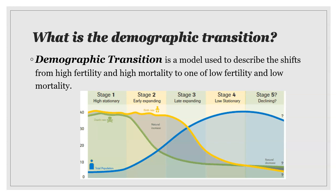Stage two of the demographic transition is characterized by a rapid decrease in a country's death rate while the birth rate remains high. The total population will rise because births outnumber deaths, not because the birth rate is rising. The decrease in death rate is commonly attributed to improvements in overall health, specifically access to pediatric care, as well as education, gender equality, and technological advances in food production and sanitation. Countries remaining in stage two include much of sub-Saharan Africa, Guatemala, Palestine, Yemen, and Afghanistan.